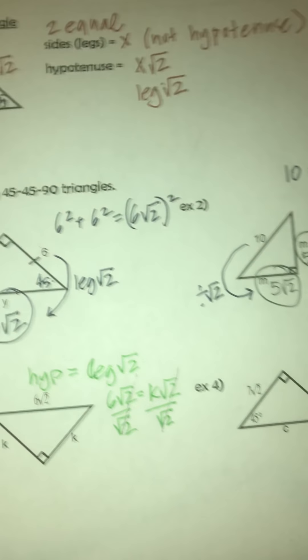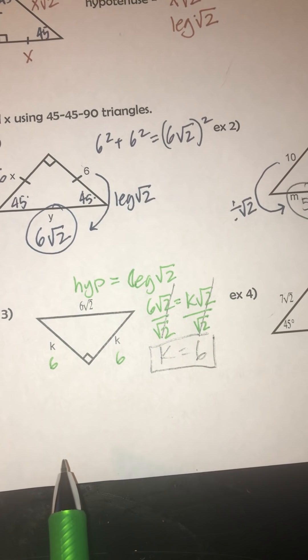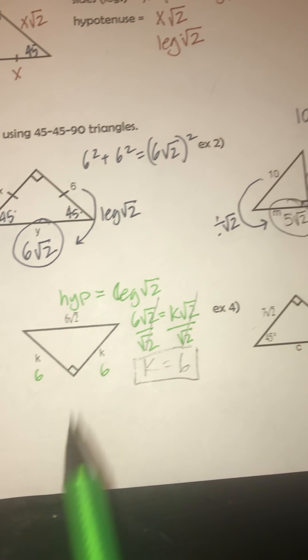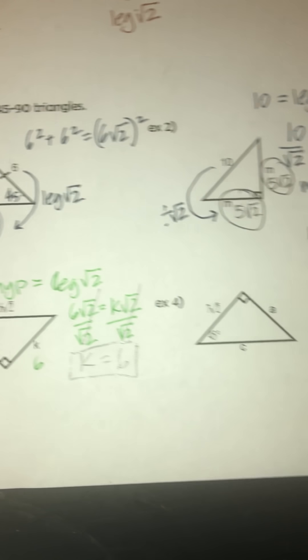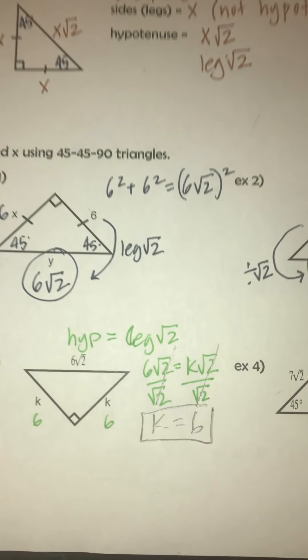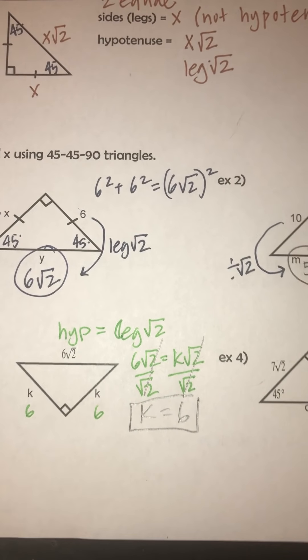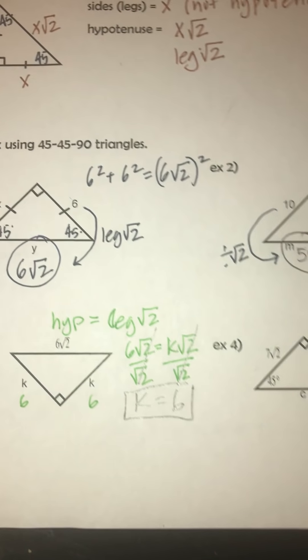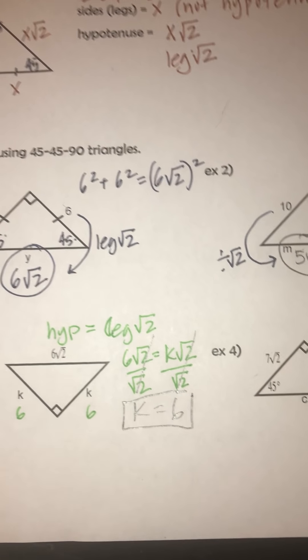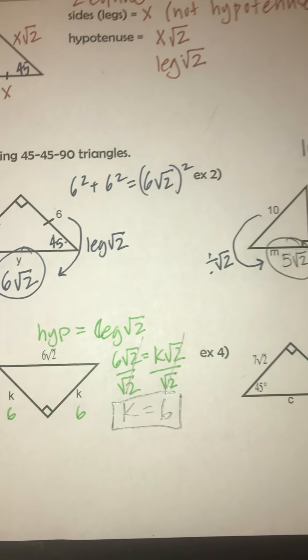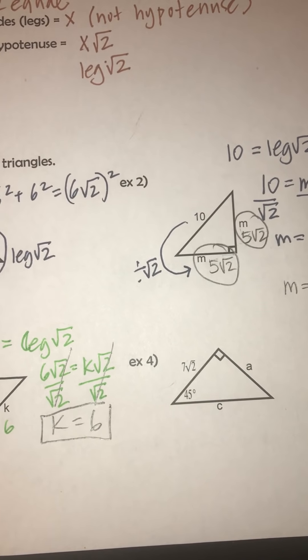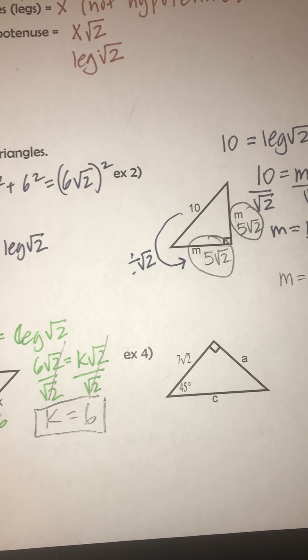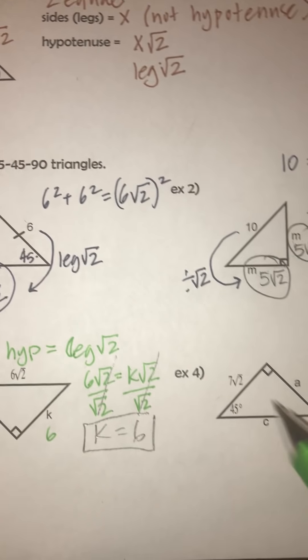Now some of you who don't like showing your work might wonder why I showed my work on that. It's perfectly fine in this case to just say k has to be 6 because the leg times the square root of 2 will equal that. I'd suggest pausing the video and rewinding if needed before you go in to submit your quiz. Go through these notes and make sure you're really understanding as we go. Or email me questions if needed.